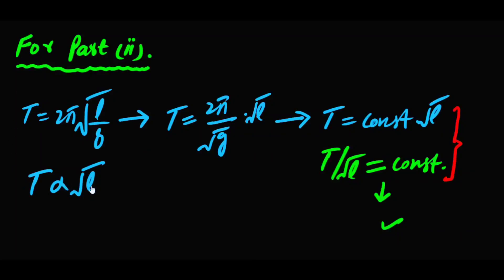Second part میں ہم نے ثابت کرنا ہے کہ time period of pendulum is directly proportional to square root of length۔ T = 2π√(L/g) سے، چونکہ ایک specific location پر g constant ہے، 2π/√g ایک constant ہے۔ اس طرح T = constant × √L، یعنی T ∝ √L۔